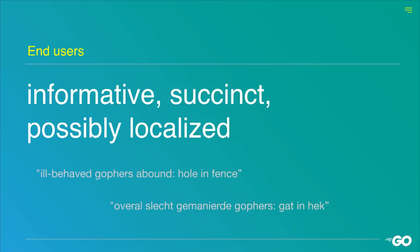So end users, when they see an error message, they want it to be informative and succinct, and also possibly localized. An end user might not speak the same language as a developer, so it would be good if these messages can be translated.